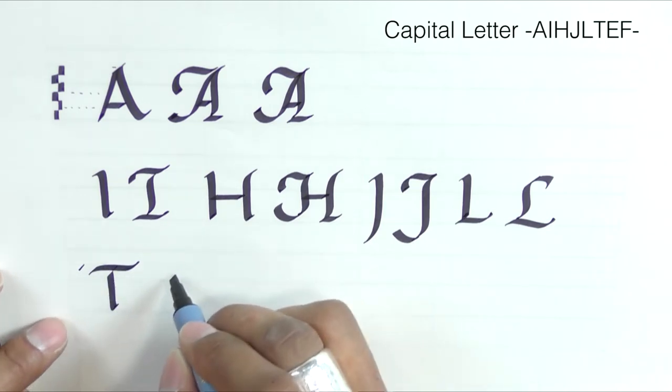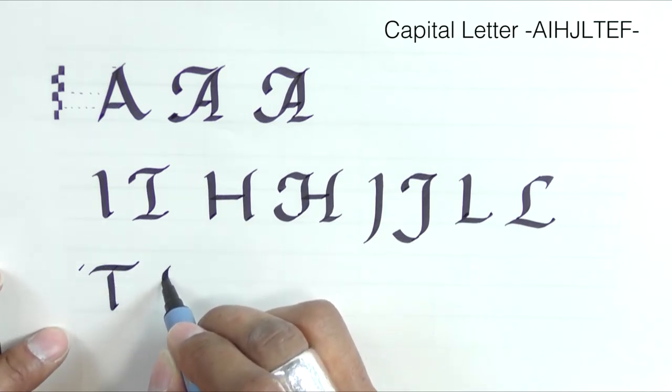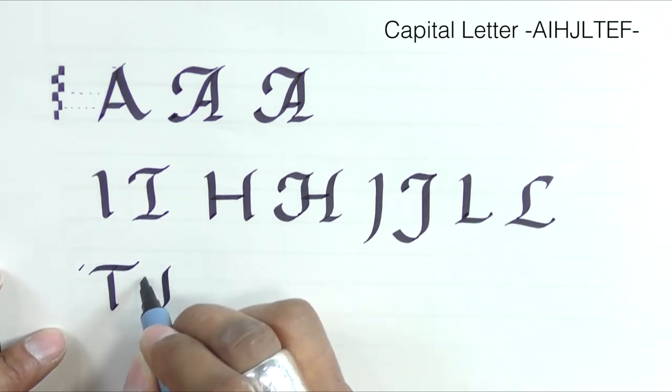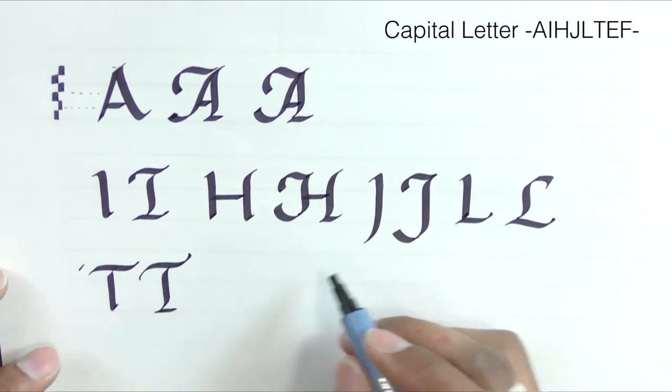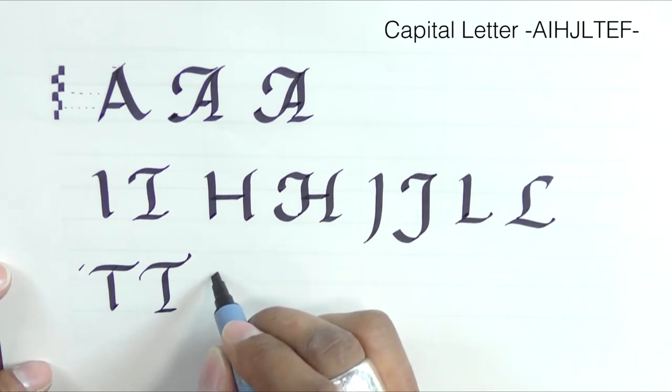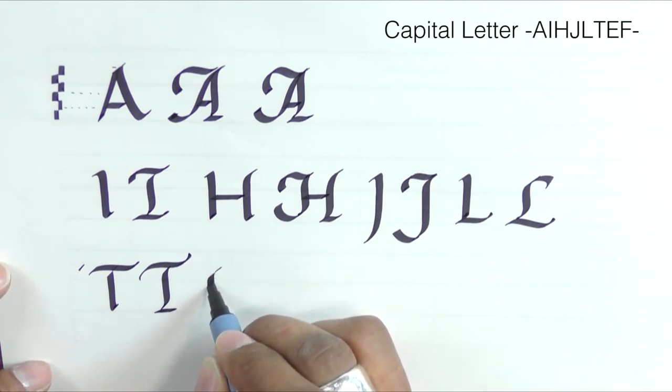The reason for that is if you start the T at the cap height, when you put the top bar in it raises the letter too high as you can see here. So let's do that again. One and two and three for the swash letters.